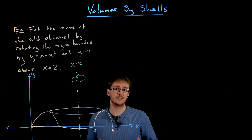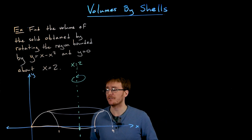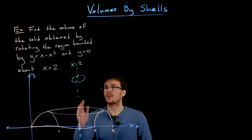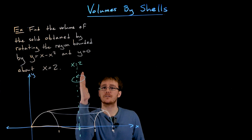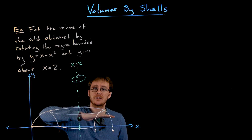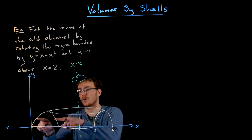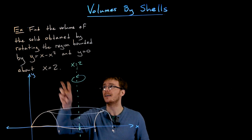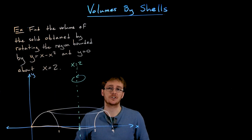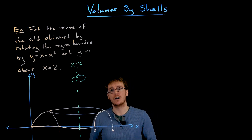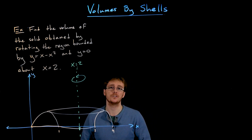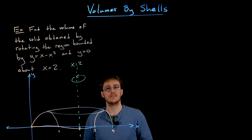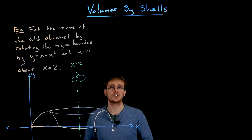The shell method is the approach we'll use here. If we didn't have that hint, we might consider the disk or washer method. But since our axis of rotation is vertical, the washer method would require a horizontal slice, forcing us to describe the outer and inner radius as a function of y — solving x minus x squared equals y for x, which requires the quadratic formula and gets messy. The shell method is clearly the better choice.